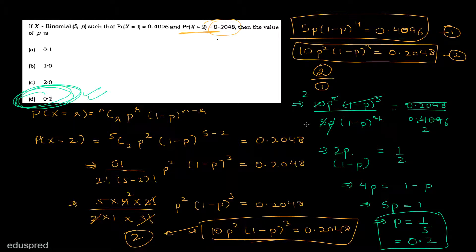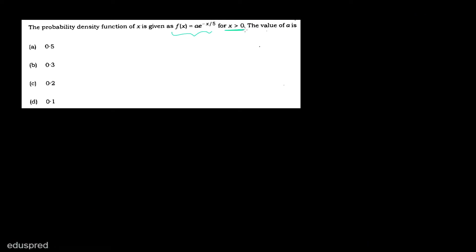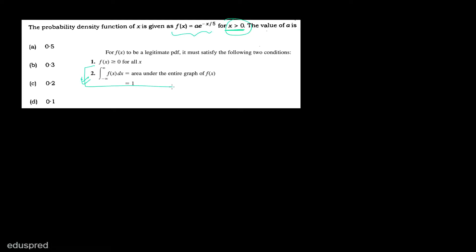Let's move to the next question. The probability density function of x is given as f(x) = a × e^(-x/5) for x greater than 0, and we have to find the value of a. Note that we are dealing with a continuous random variable. For f to be a legitimate PDF, it must satisfy the condition that the integral of f(x) dx equals 1.